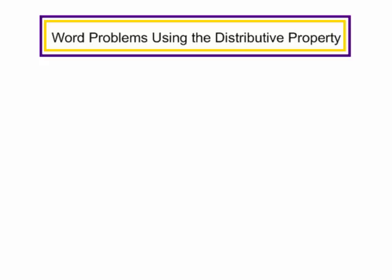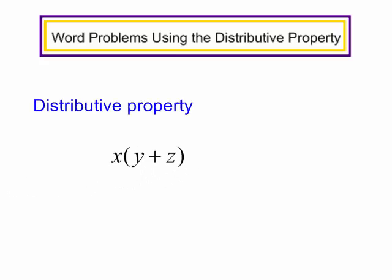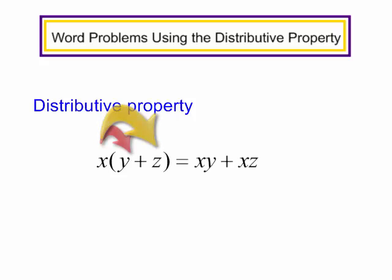Let's talk about word problems using the distributive property. The distributive property states that x times the quantity y plus z is equal to x times y plus x times z.